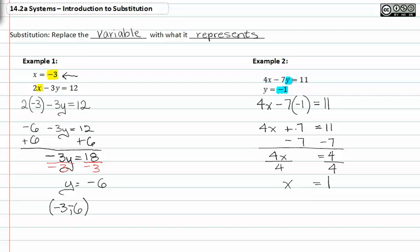Notice now that we have the value for both x and the value for y and we can write it as a coordinate point.